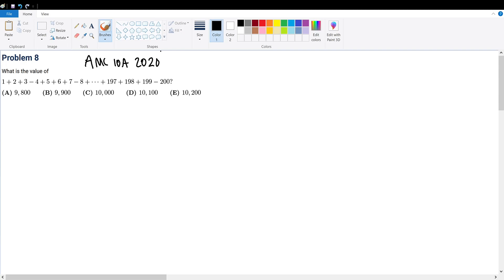AMC 10A 2020 problem 8. What is the value of the sequence? The sum of this number can be simply taken as the arithmetic sum subtracted by over counted numbers.